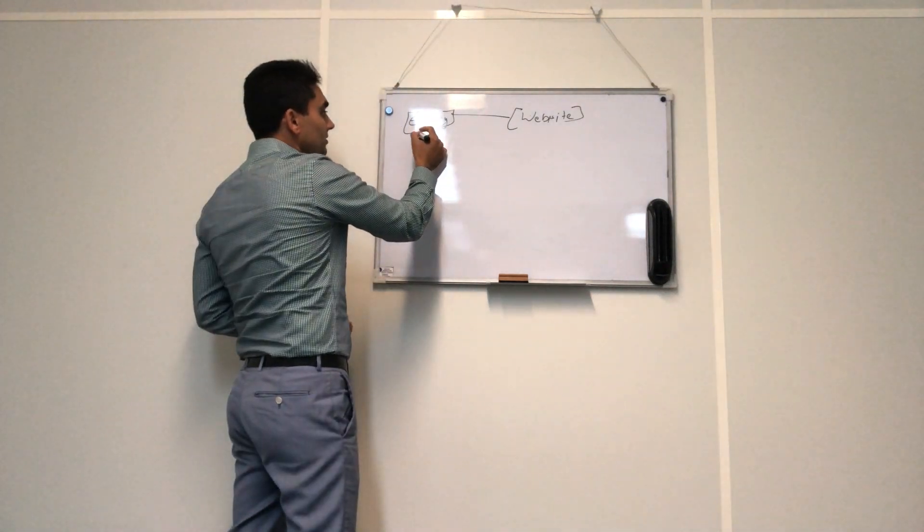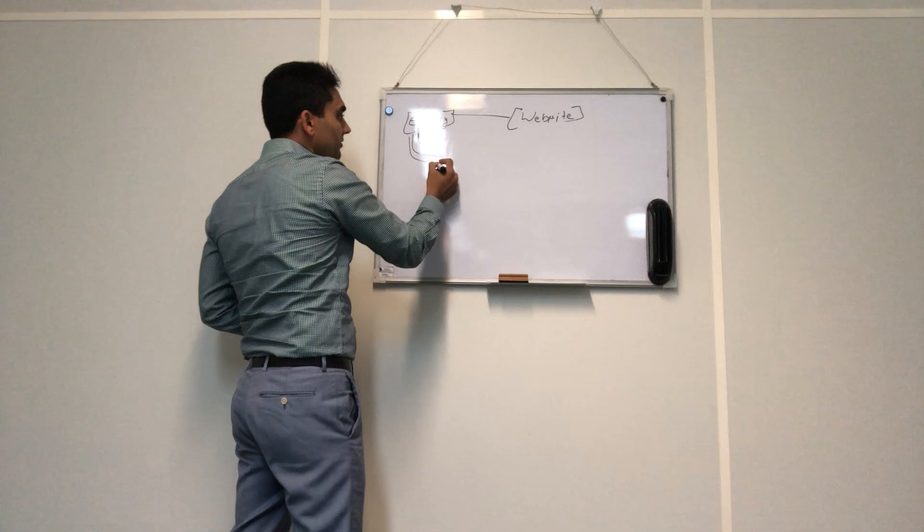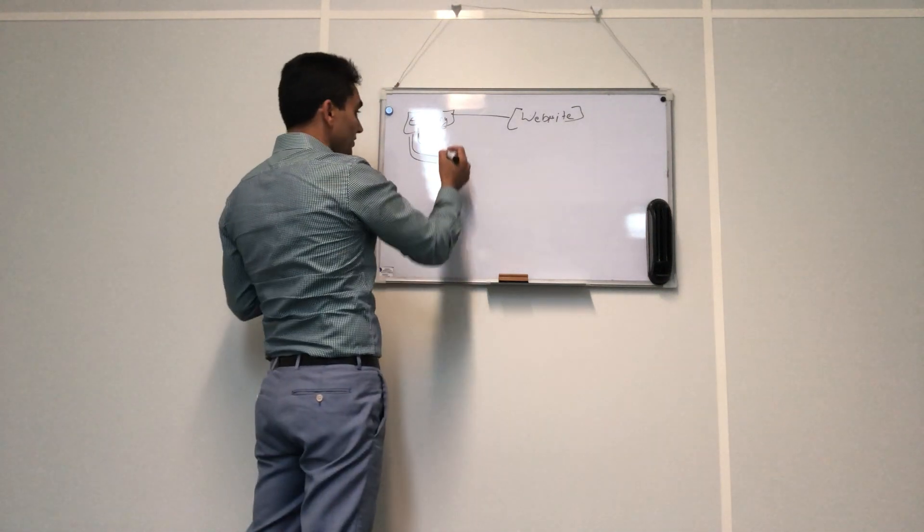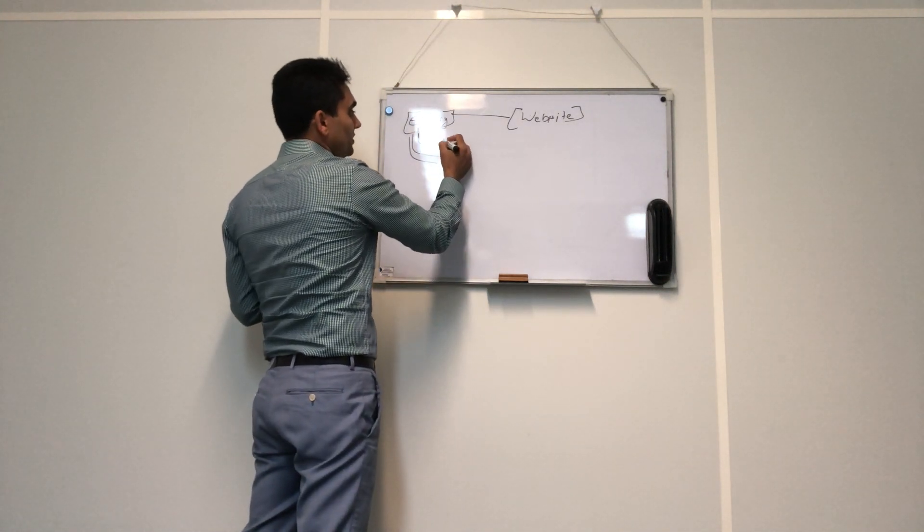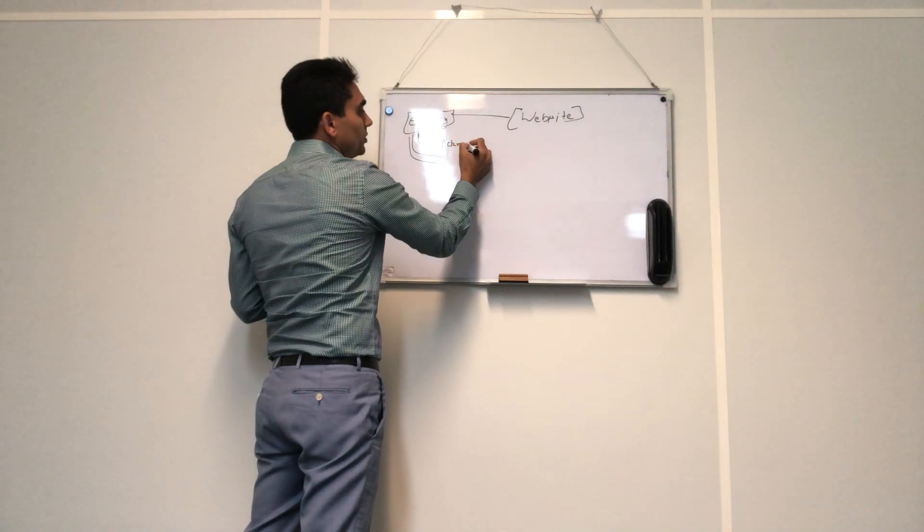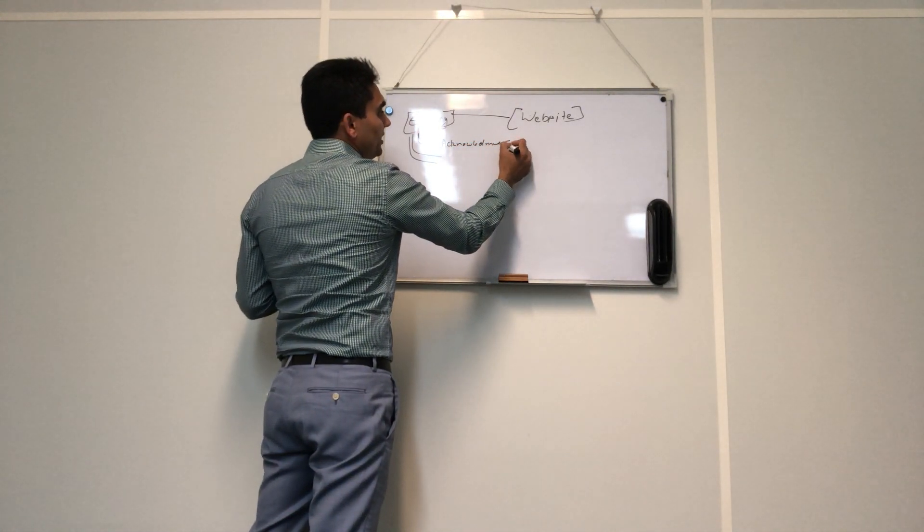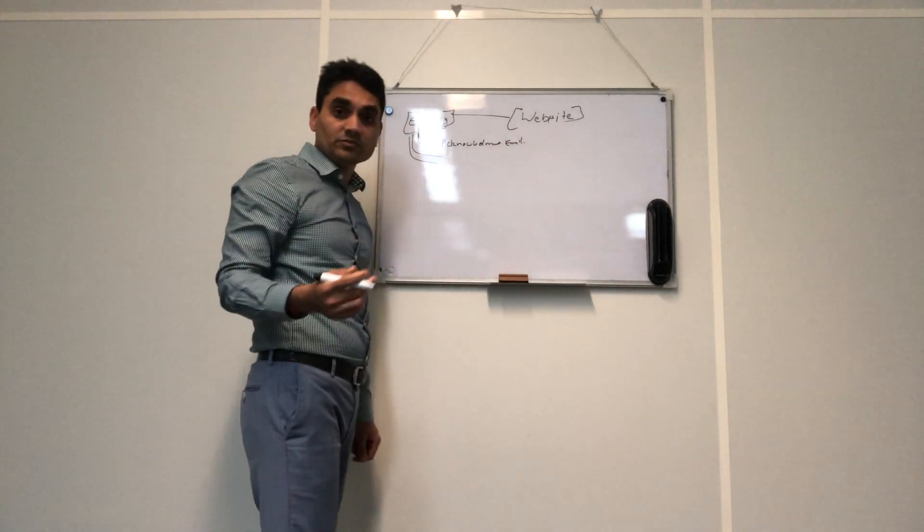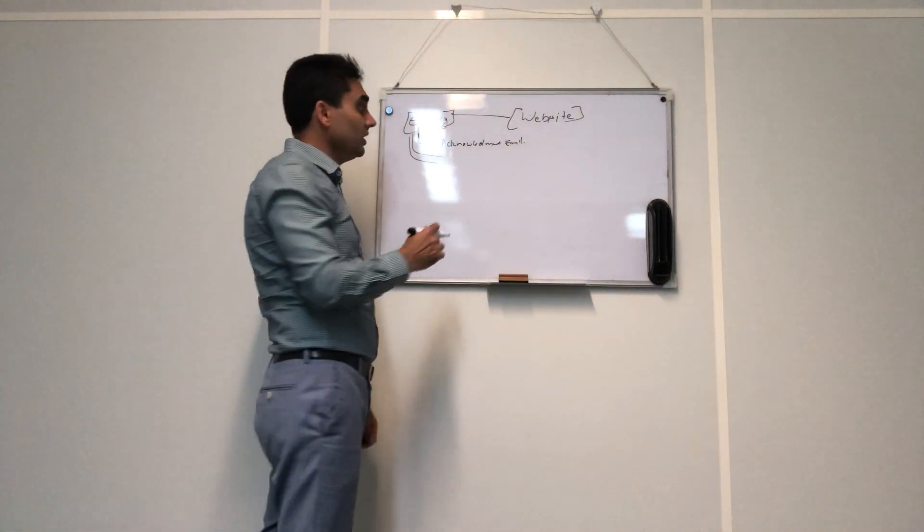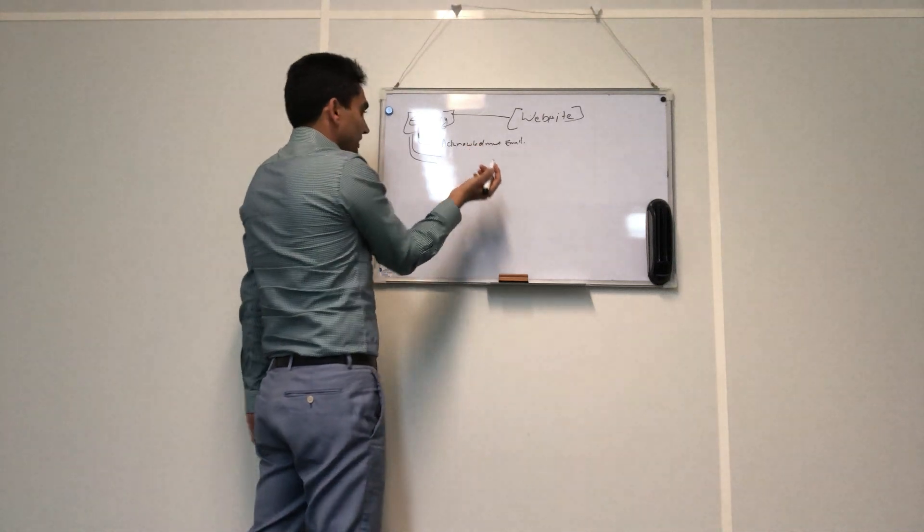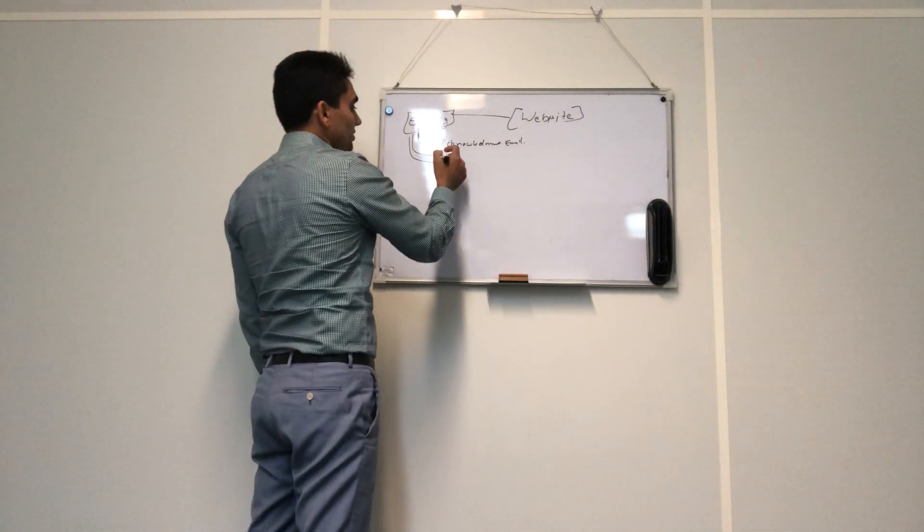From your leads, you will start doing your activities on it. The first activity you might do is send an acknowledgement email to them. Once you've sent the acknowledgement email, hopefully your CRM should be able to automate this part, and then you're going to make a phone call.